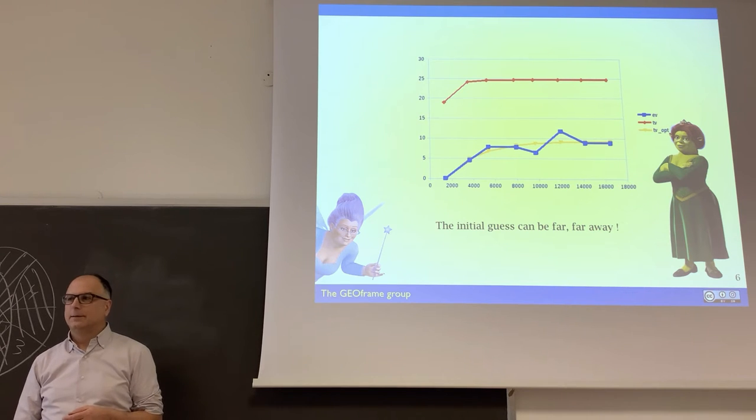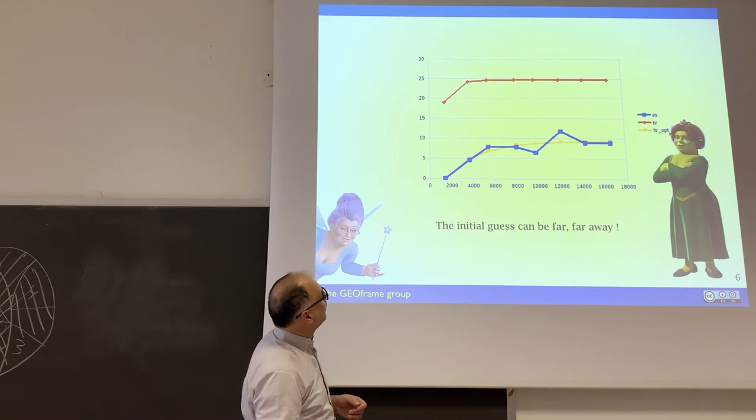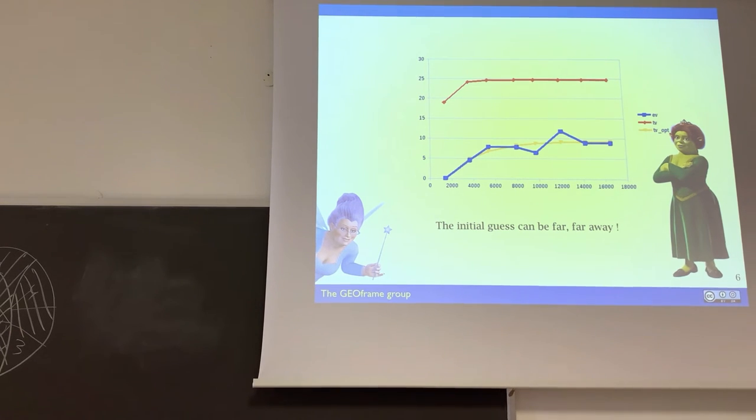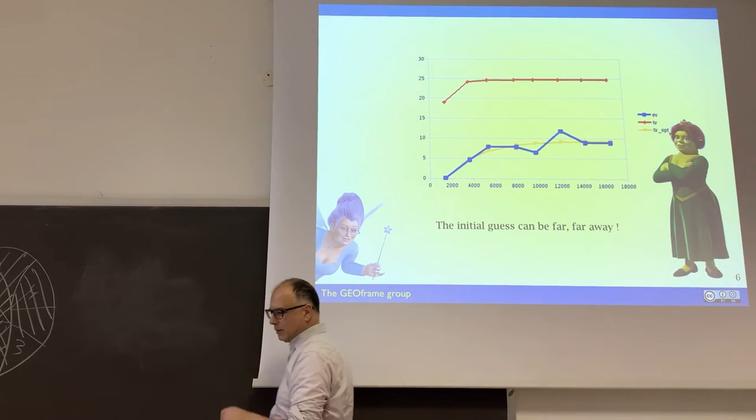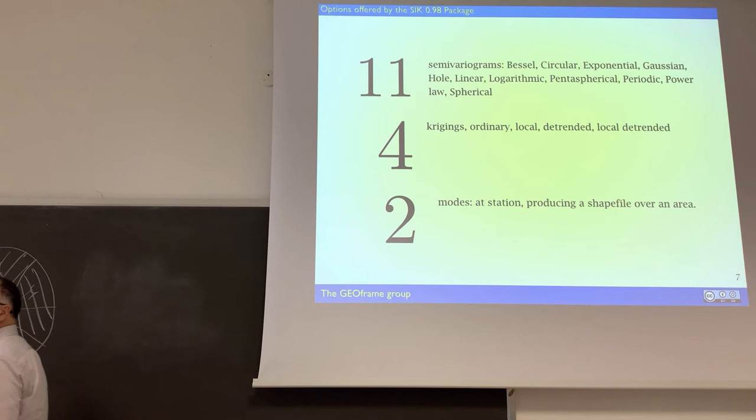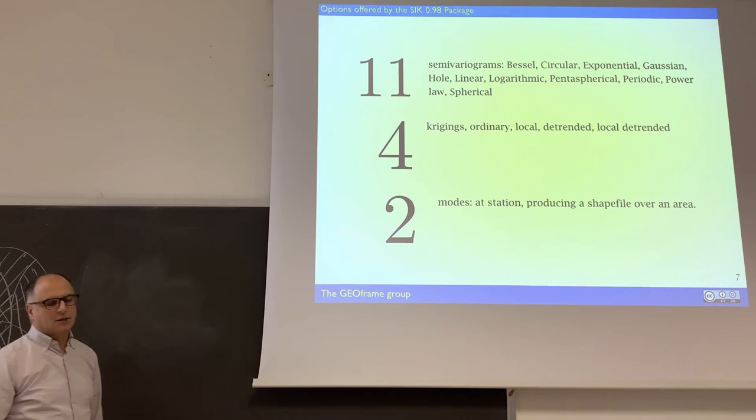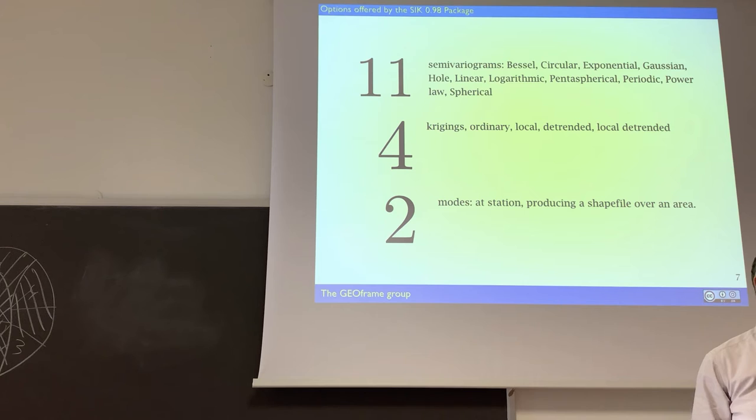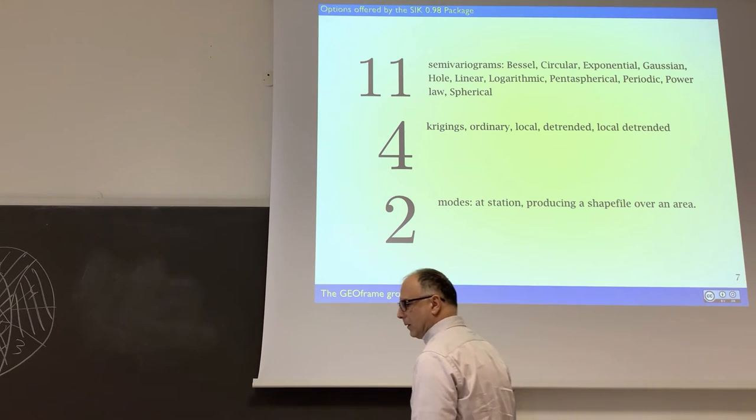Yeah, the things that, you know, the experimental, the thing can go very not very easy. The initial estimation can be very far away. And so there is some work to do. What does our package contain? Contains 11 choices of theoretical semi-variograms. Actually, four types of kriging. The simple kriging, and the trended kriging, and the local, the trended, and the local simple kriging. So that I am going to explain what they are.